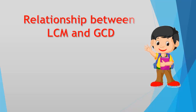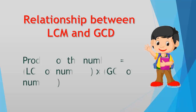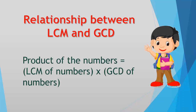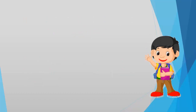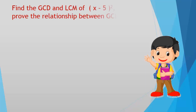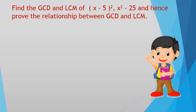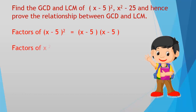Relationship between LCM and GCD: the product of the numbers equals the product of their LCM and GCD. We shall see an example — find the GCD and LCM of (x - 5)² and (x² - 25), and hence prove the relationship. Factors of (x - 5)² are (x - 5)(x - 5); factors of (x² - 25) are (x + 5)(x - 5).